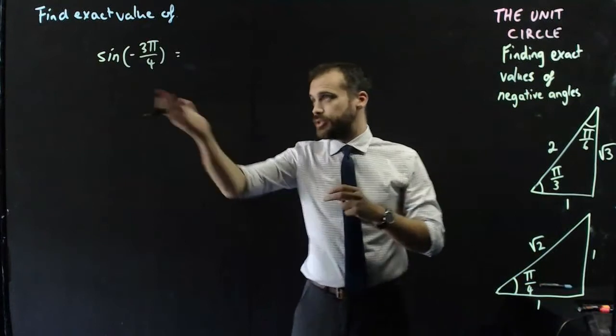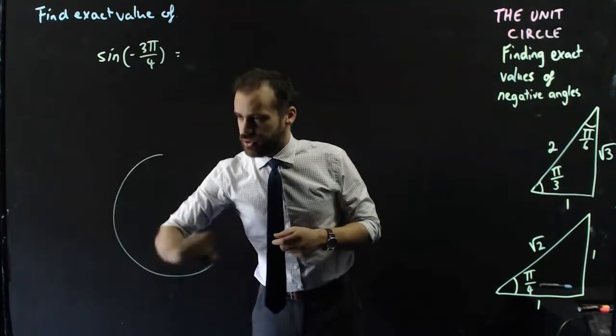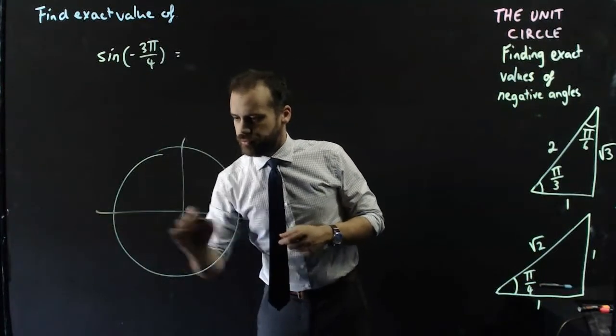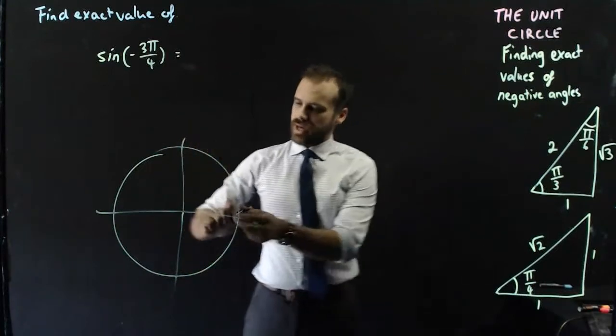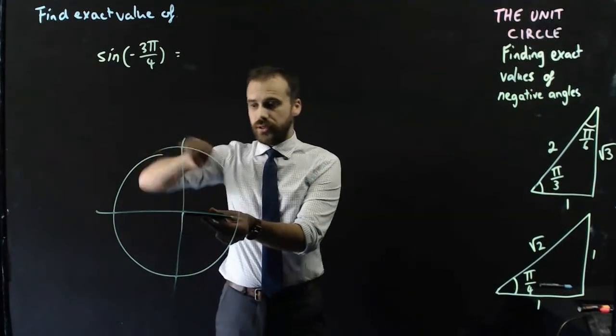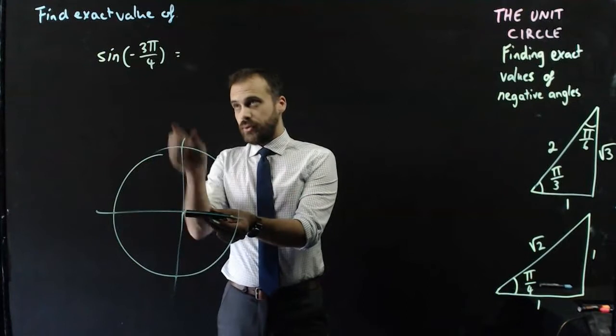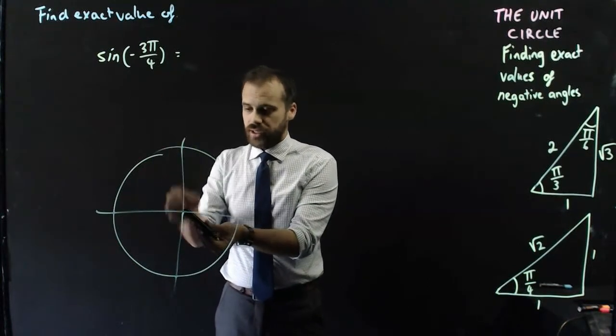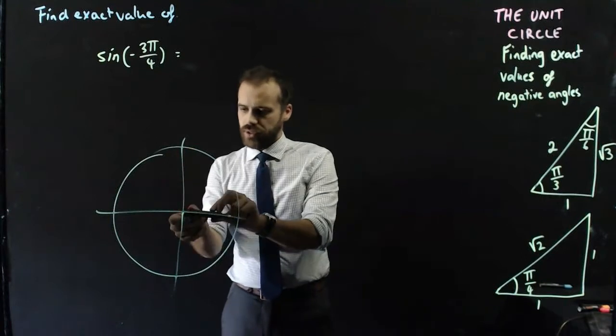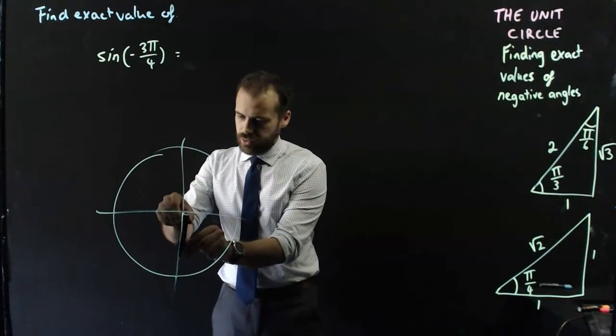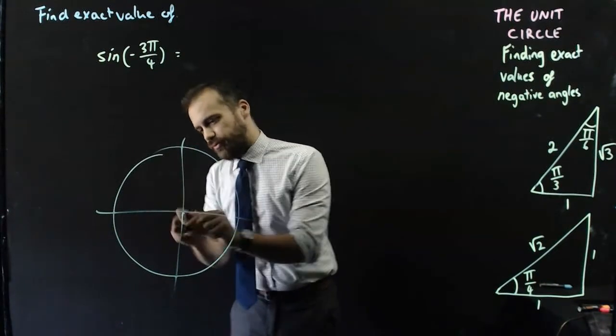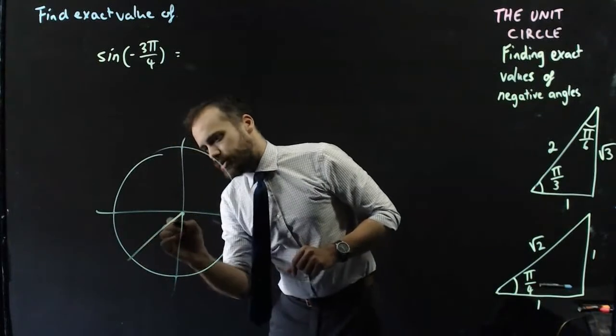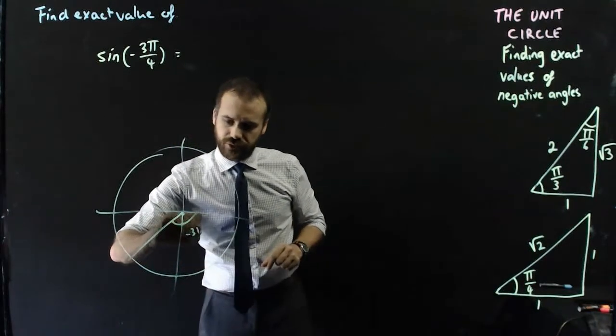All right, so again, it's just a negative angle. So, unit circle, we're always drawing them. We start at the x-axis, and instead of moving anticlockwise like we have, we move clockwise because it's negative. So, negative 3π/4, that's 1π/4, 2π/4, 3π/4. So, that angle there represents negative 3π/4.